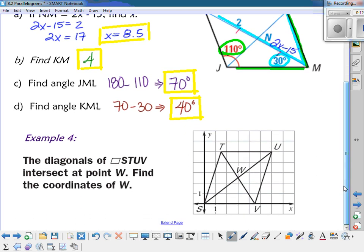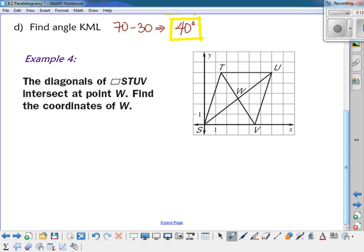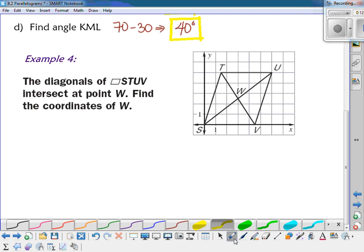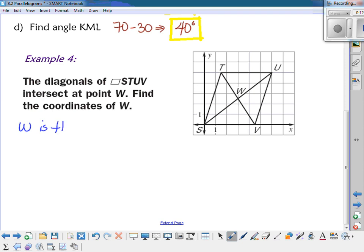We have another example here. The diagonals of parallelogram STUV intersect at point W. Find the coordinates of W. So because the diagonals bisect each other, that means that W is the midpoint. It's the midpoint of both SU and TV. So if I just use the endpoints of one of those segments to find the midpoint, then I'll know the coordinates of W. So I'm going to go ahead and use SU.